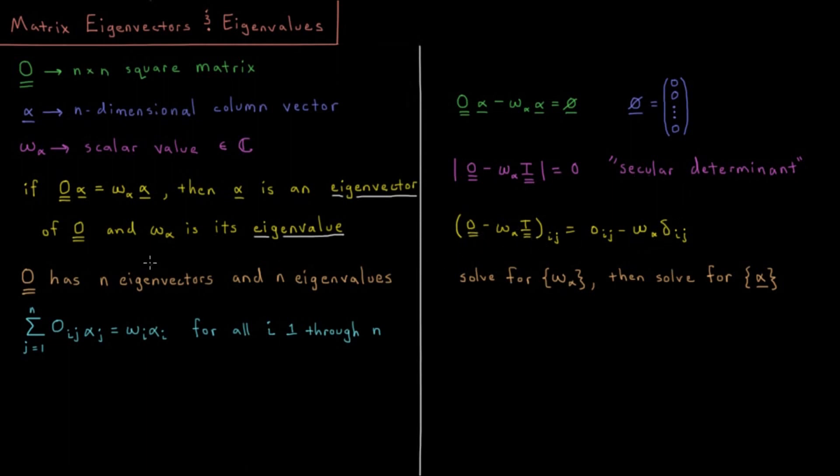The procedure, if we have a given matrix and we want to find all of the eigenvalues and eigenvectors, would be to use this secular determinant equation. We can solve the secular determinant to find all the different eigenvalues, and then once we have the eigenvalues, we can solve for the eigenvectors using procedures that we're going to describe later in this chapter.